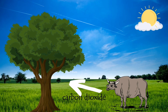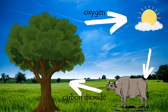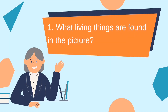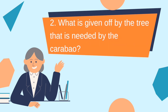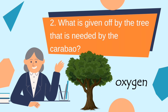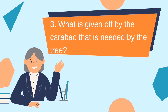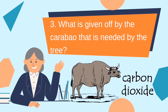As part of our review, study the diagram and answer the following questions. Number 1: What living things are found in the picture? We have the tree and a carabao. Number 2: What is given off by the tree that is needed by the carabao? The answer is oxygen. Number 3: What is given off by the carabao that is needed by the tree? The correct answer is carbon dioxide.